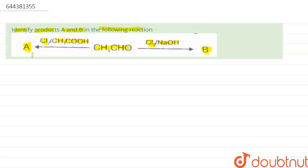So here we have to find out product A and product B. Here is the solution. Let's take the reaction first: acetaldehyde CH3CHO on reaction with Cl2 in presence of NaOH gives product B.